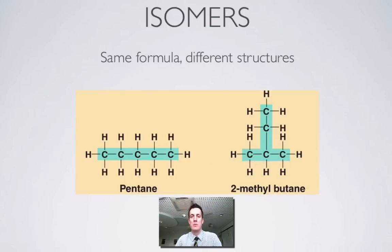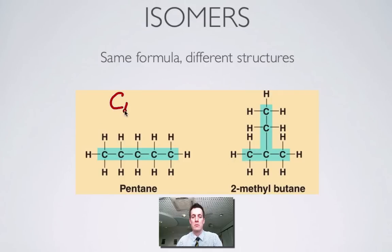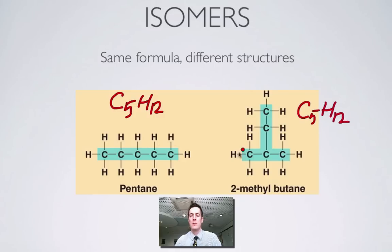Just a very quick look at what we mean by isomers — the detail is for another screencast. Here are a couple of alkanes. We can tell they're alkanes because they contain carbon and hydrogen, making them hydrocarbons, and they only have single bonds, so they're saturated — they can't hold any more atoms. Both molecules here have five carbons, so without counting hydrogens, they both have the same formula.